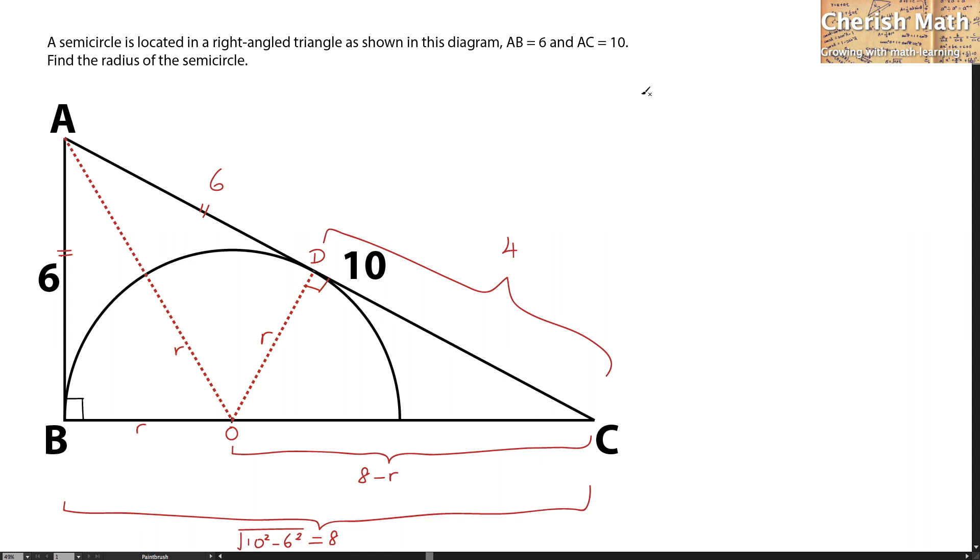Now, the last step is using the Pythagorean theorem to solve the problem. 8 minus R as the hypotenuse squared equals 4 squared plus R squared. Let me work out the expansion. That would be 64 minus 16R plus R squared equals 16 plus R squared.